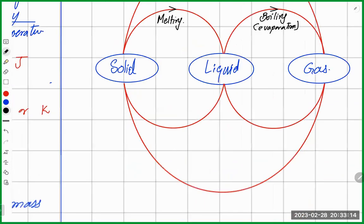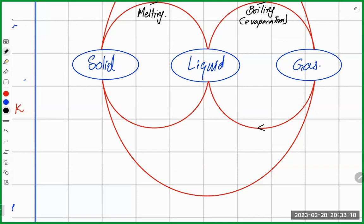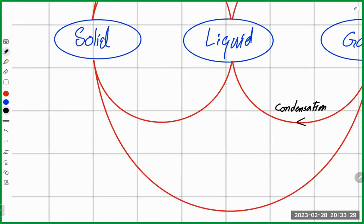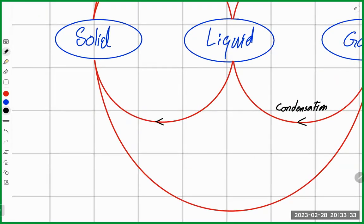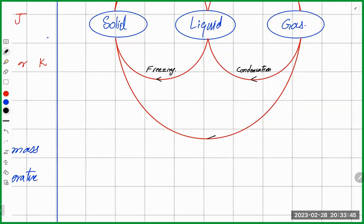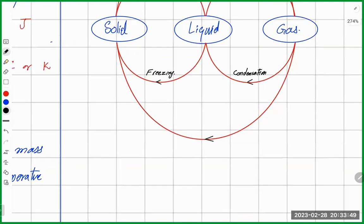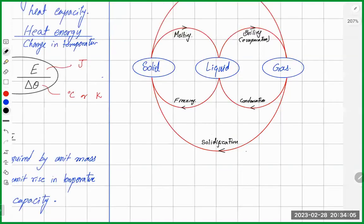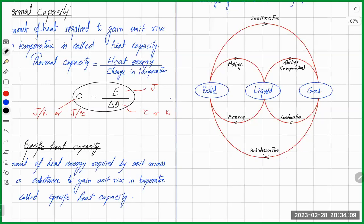Gas converting into liquid is called condensation. Liquid converting into solid is called freezing. Gas converting to solid is called desublimation or solidification. So these are the changes of state that can happen.